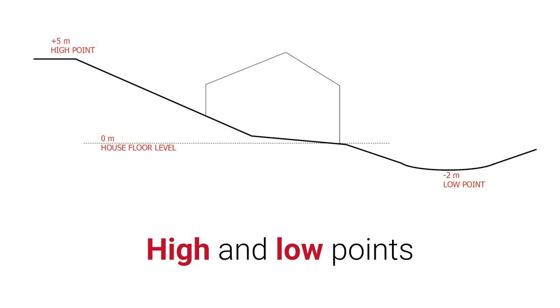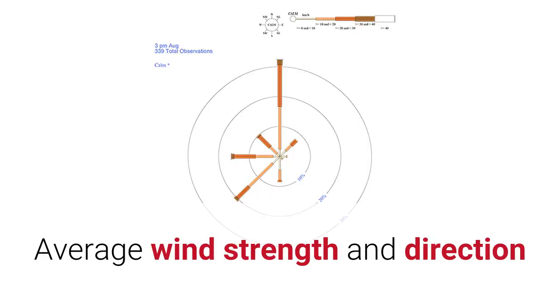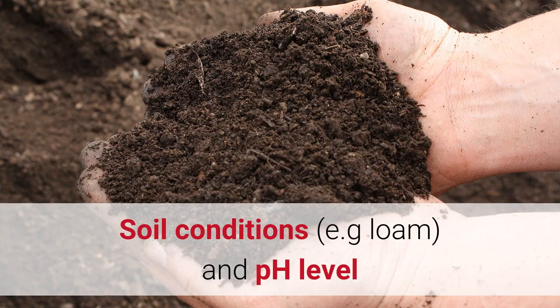The first thing you want to look at is the high and low points of your site, because that will influence where water runs and where it collects and pools. You also want to know the average yearly rainfall, because that will influence how much water you can expect and where that water will run to. You also want to know average wind strength and direction — often that will change throughout the year, and that can have an impact on where you place particularly tall items. You also want to know soil conditions, such as if it's loam, sandy or clay, and the pH level of the soil. Even if you don't exactly understand what to do with this information, you can take it to someone who does.